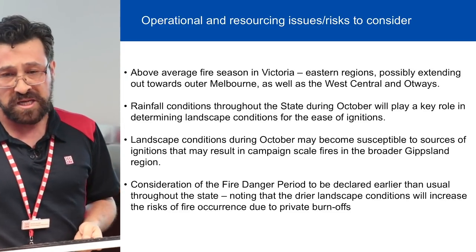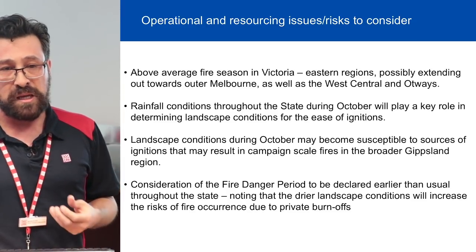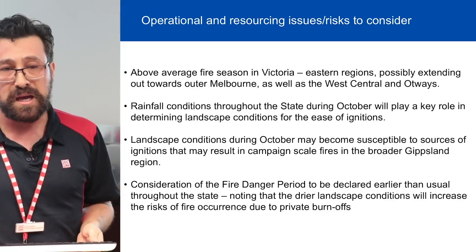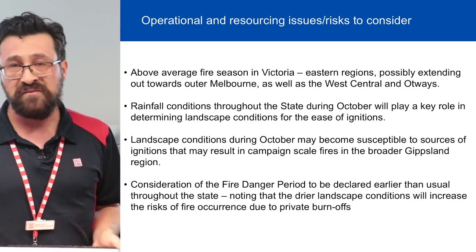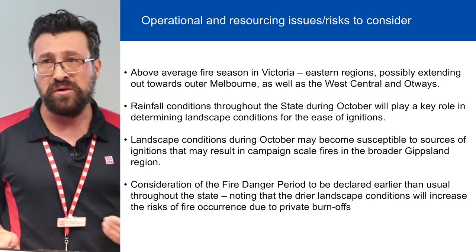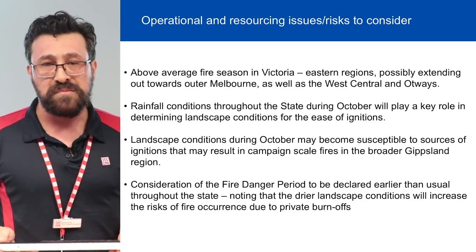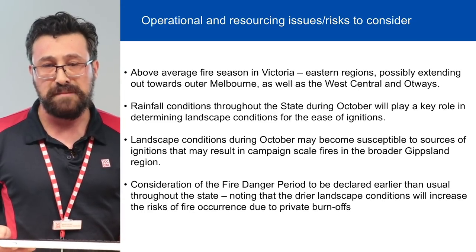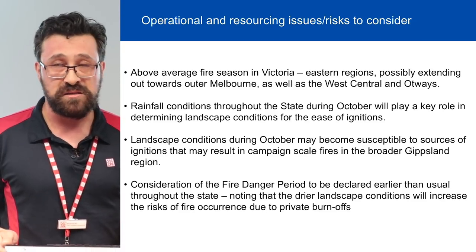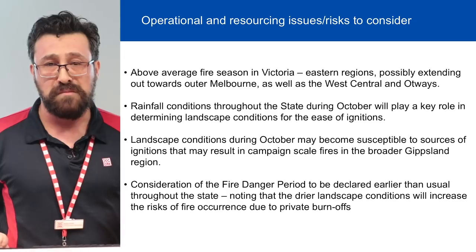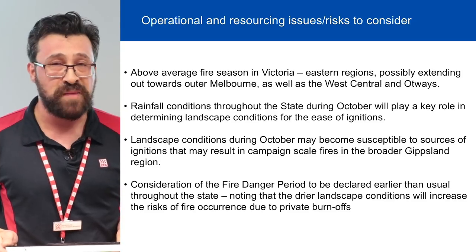In terms of risks to consider over Victoria — in August or early September, the bushfire seasonal outlook map had East Gippsland as above average. Depending on October rainfall patterns, it is likely that the above-average forecast will be extended beyond East Gippsland, perhaps to the area out of Melbourne and possibly all the way to the Otways, again depending on what that rainfall pattern looks like.